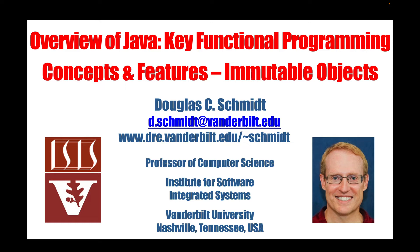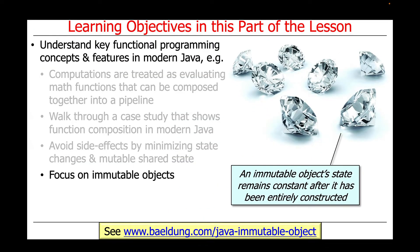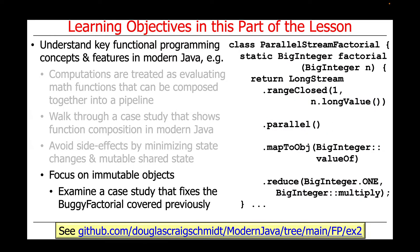We're now going to cover the next topic in our overview of Java's key functional programming concepts and features, which will focus on immutable objects. After first covering the key concepts associated with immutable objects in Java, we'll then examine a case study that fixes the problems with the buggy factorial example we covered in the previous part of the lesson. This example can be found in the EX2 project in the FP folder in my modern Java GitHub repository.